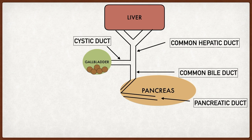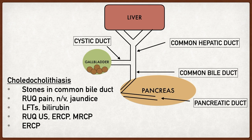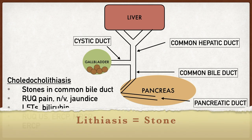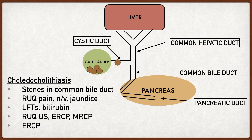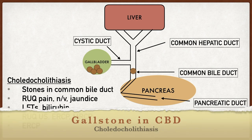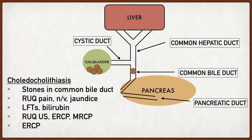The next disease is choledocholithiasis. Breaking down the word: lithiasis means stone, and choledoco refers to the common bile duct. So choledocholithiasis is the presence of a stone within the common bile duct. This is different from cholelithiasis, where a stone was in the gallbladder, or cholecystitis, where a stone was lodged in the cystic duct — here it's in the common bile duct. Patients can still experience right upper quadrant abdominal pain.